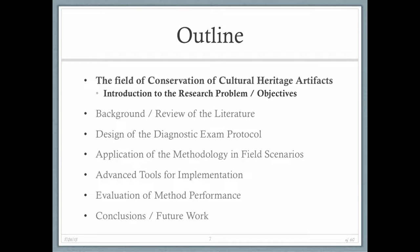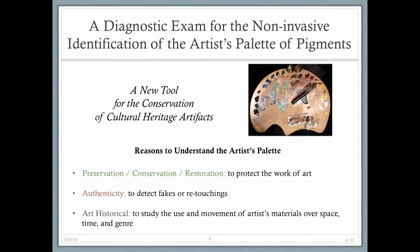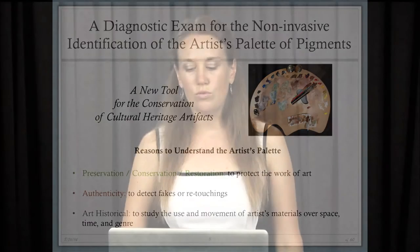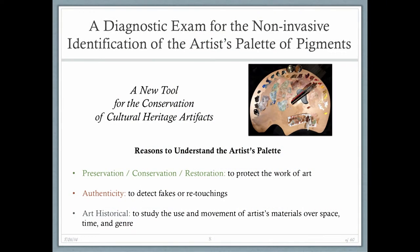Now we'll get to the field of conservation of cultural heritage artifacts. Why do we want to understand the artist's palette of pigments and why create a diagnostic exam to identify them? The first reason is preservation-based — to understand how to protect a work of art, we need to know what it's made of, including what pigments are present. Second is authenticity, to detect fakes or retouchings, because some pigments are characteristic of a time period or a particular artist. The last is art historical — to study the use and movement of artist's materials over space, time, and genre.